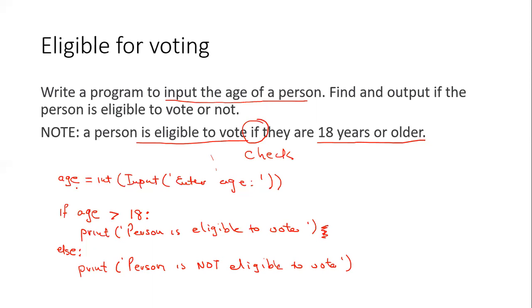So here we now check the age and a person is eligible to vote if they are 18 years or older. So the question we have to ask ourselves is if the user enters 18 as the age, will this condition be true or false. So let's test it. The age is 18. Is 18 greater than 18, true or false? 18 is not greater than 18. So if the condition is false it will go to the else and it's going to say person is not eligible to vote. So that's not correct.